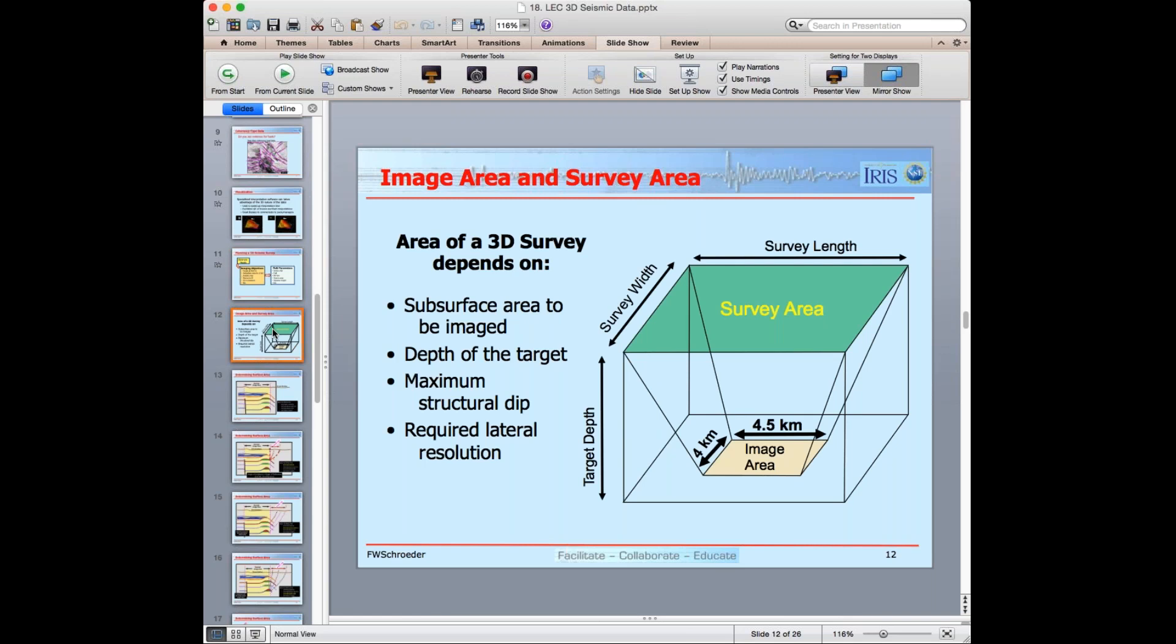The surface area of the 3D survey depends on several things. It depends primarily on how much of the subsurface we want to illuminate or image. And so the surface area is the light green. What we want to image is below at some specific depth. And on the slide, I have the image area is 4.5 kilometers east-west and 4 kilometers north-south. I have to know what the depth of the target, the maximal structural dip, and what sort of lateral resolution we need in order to answer the business questions.